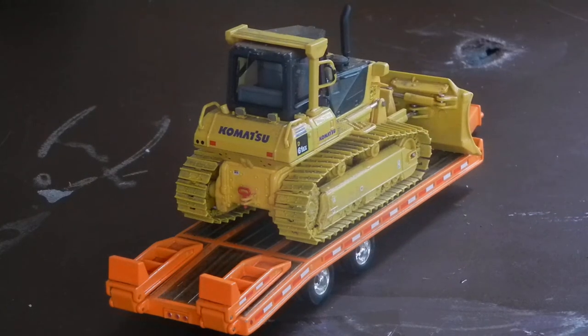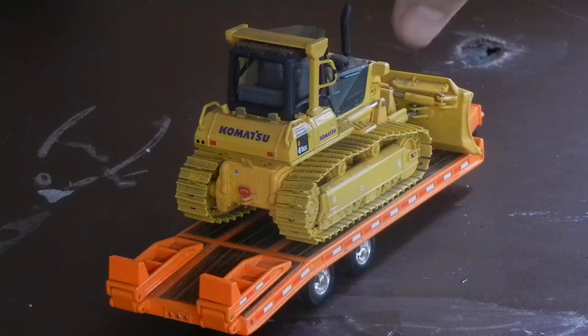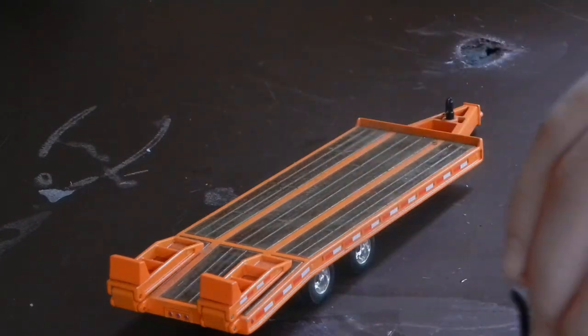This is the Universal Hobbies Komatsu D61 Yaks, made in 1/50th scale. That looks pretty mean on there because it's so big.